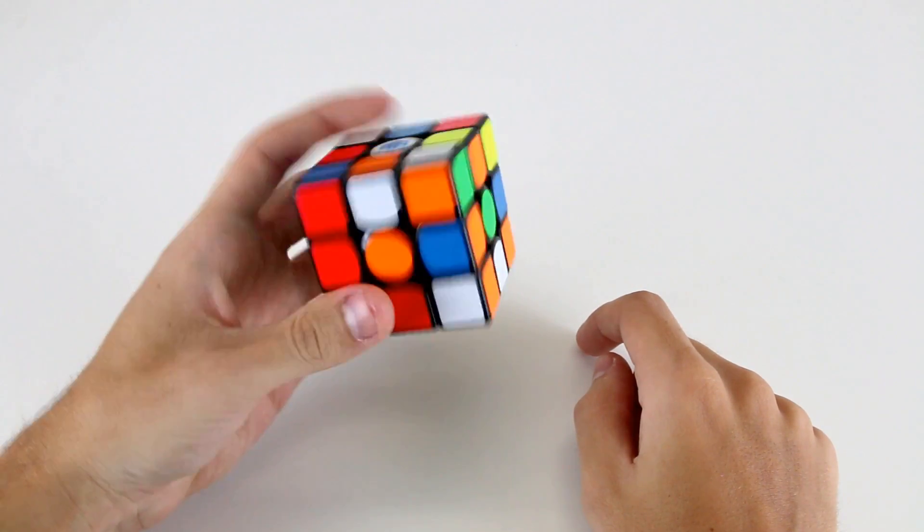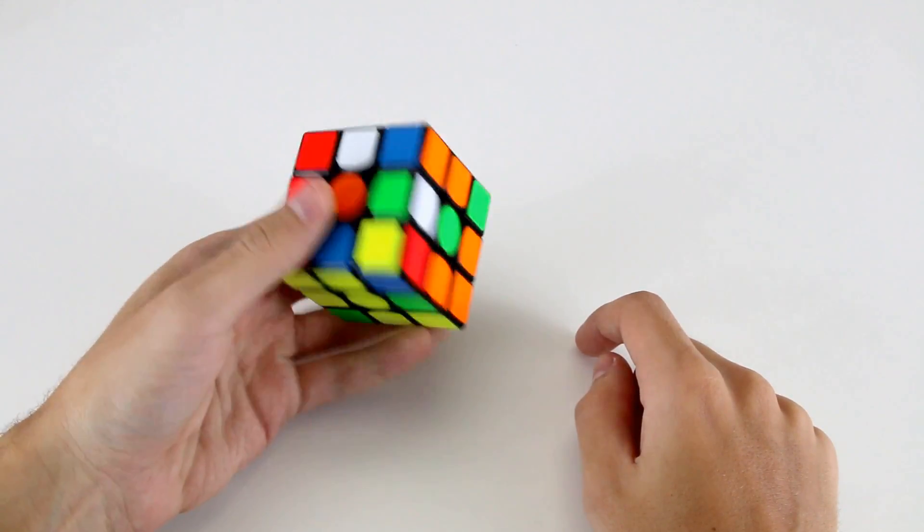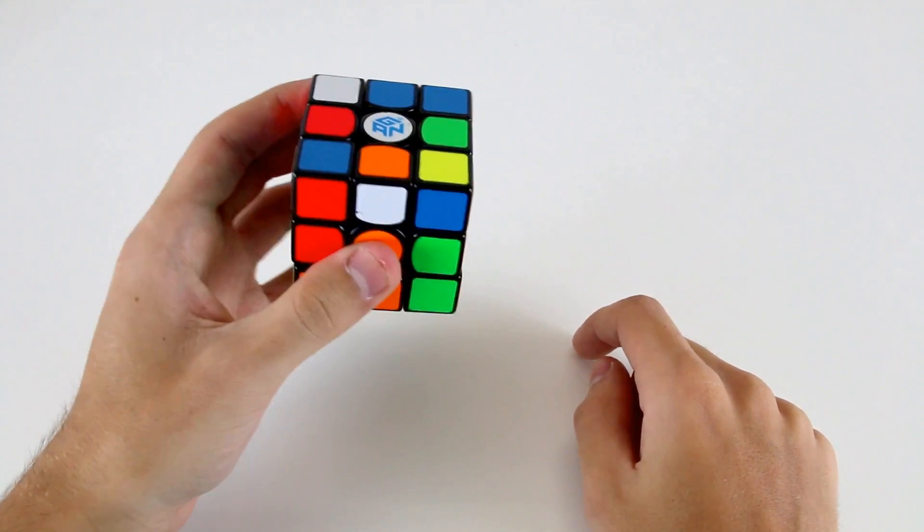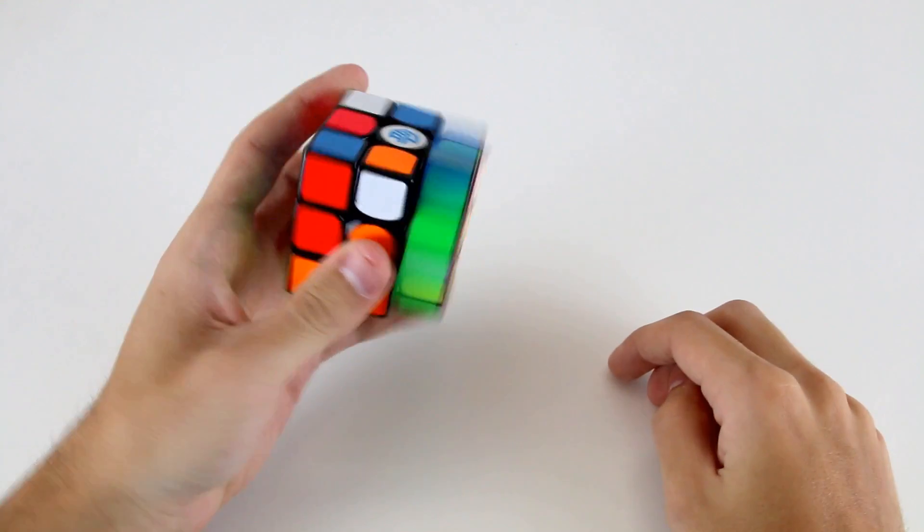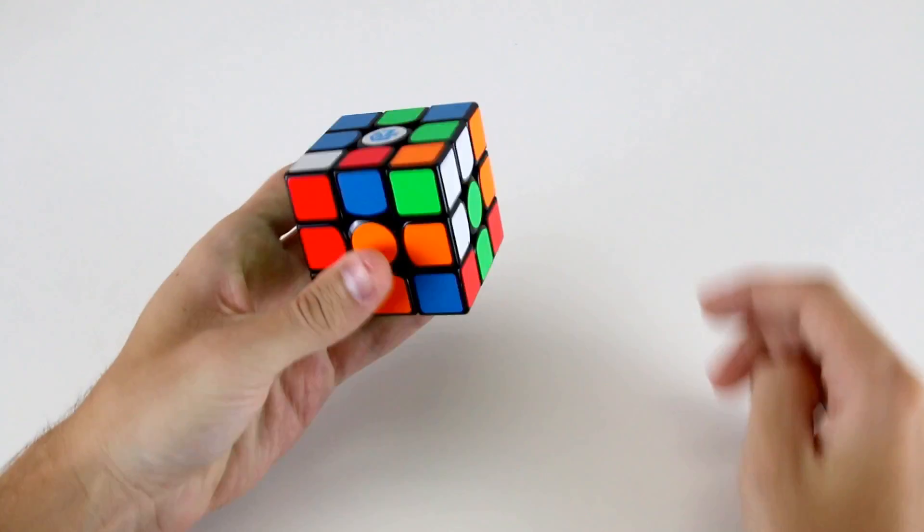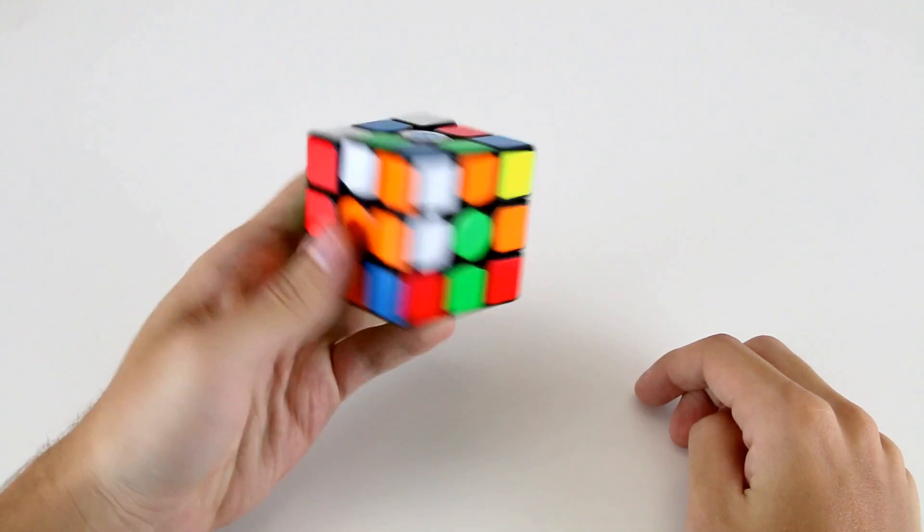If we go D prime, F, R, D prime, R, D prime. Because I'm in this position, probably what I'll do is do R, U prime, R prime to set these two up and then do L, U, L prime like that.